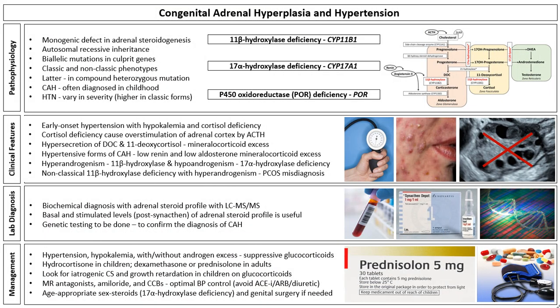Congenital adrenal hyperplasia is an uncommon group of inherited genetic disorders, and a subgroup of these diseases can present with endocrine hypertension. In Chapter 9, Congenital Adrenal Hyperplasia and Hypertension, Bhusra Gurpinar and Tulay Gurran provide the latest evidence on the clinical, molecular, pathophysiological, diagnostic and management aspects of these rare disorders.